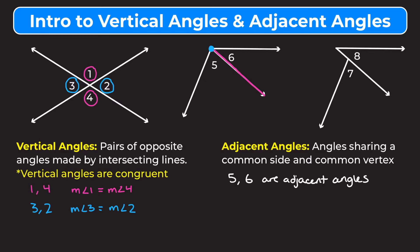In the third diagram I want to show that these angles are not adjacent, because they don't share a common vertex or fully a common side. Angle eight has this entire line as a side whereas angle seven only has part of that line as its side. Angle eight has a vertex here and angle seven has a vertex here, so even though they are touching each other, angles seven and eight are not adjacent angles.